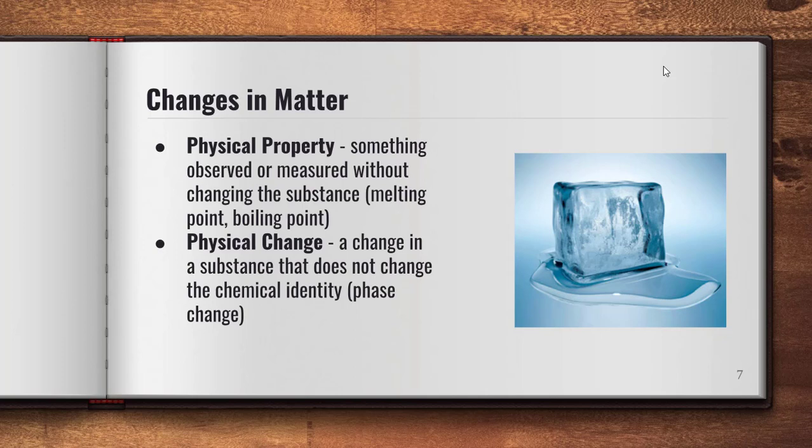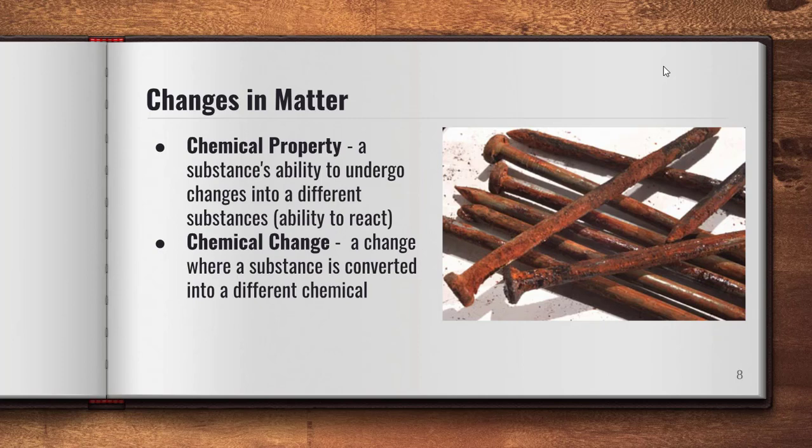We have two types of changes and properties to look at: physical properties and physical changes, and chemical properties and chemical changes. A physical property is something that can be observed or measured without changing the substance — like melting point or boiling point. A physical change is a change in the substance that doesn't change its chemical identity. For example, if I melt ice it's still H2O — whether it's ice, water, or steam — so that is a physical change.